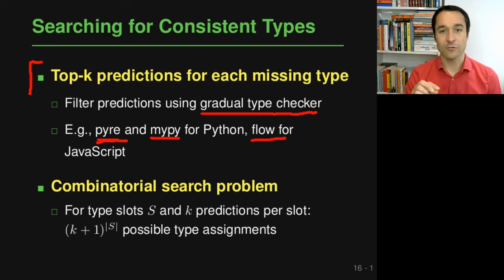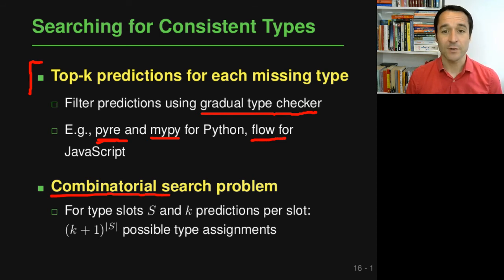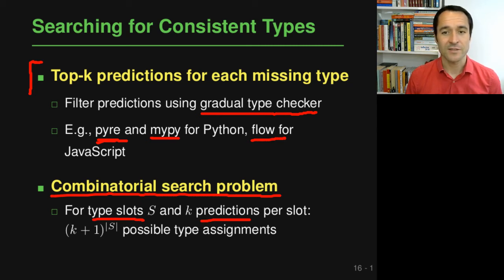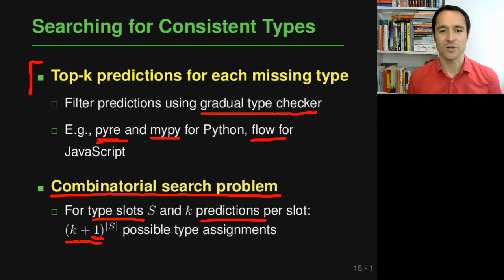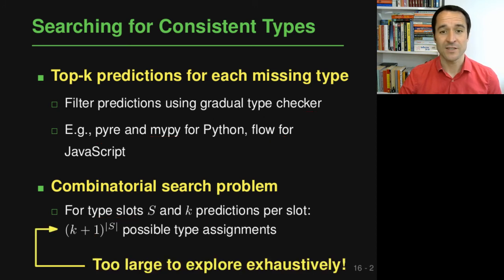Picking the right type from the ranked lists is a combinatorial search problem. We have some number of type slots — places where types are missing — and for each we have k predictions from the top-k list. The number of possible type assignments is (k+1) to the power of the number of type slots, where the plus one accounts for the option of not adding any type. This quickly becomes too large to explore exhaustively, so we need a smarter search strategy.